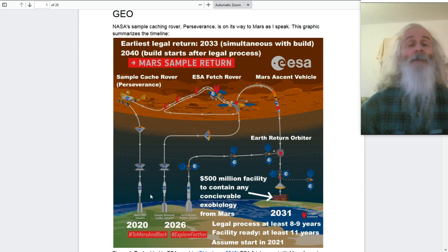NASA have sent their sample cache rover, Perseverance, to Mars already. It's on its way as I speak. ESA have planned to send the ESA Fetch rover in 2026 with the Mars Ascent Vehicle and also the Earth Return Orbiter. The aim is to return an unsterilized sample to study on Earth by 2031 to a Mars Receiving Laboratory.